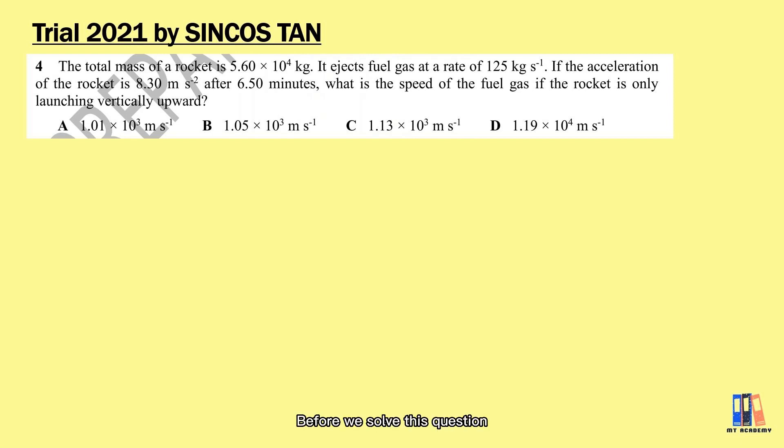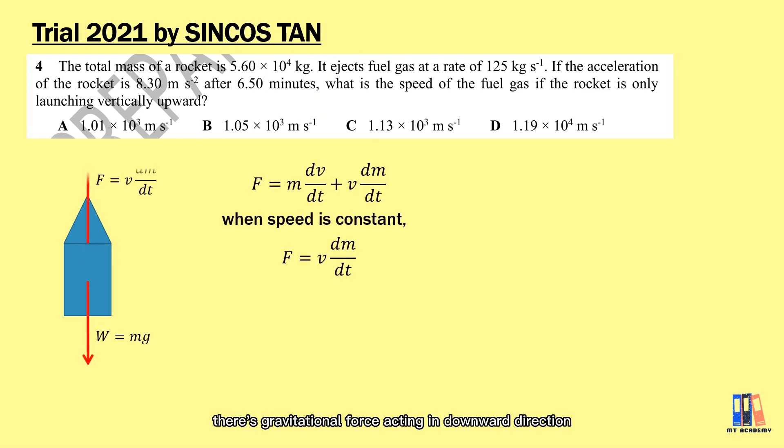Before we solve this question, let's see the free body diagram of the rocket. It has mass, so there's gravitational force acting in the lower direction. There is outward force provided by the fuel, which is proportional to the rate of fuel gas ejected. We will have the formula of outward force equals v(dm/dt), where the speed of the rocket is assumed constant in this case. If we build the equation F = ma, we will have v(dm/dt) minus mg equals ma.